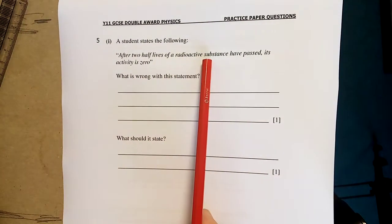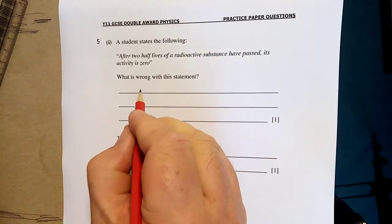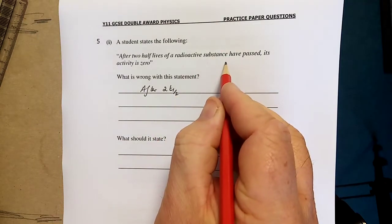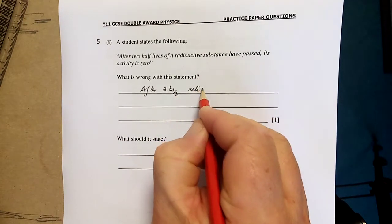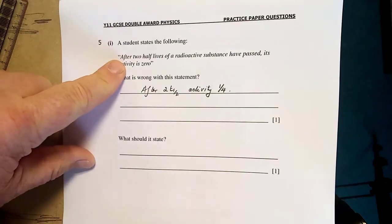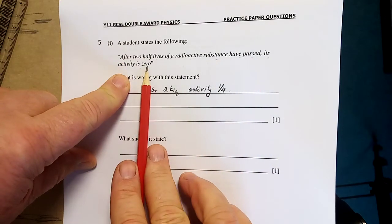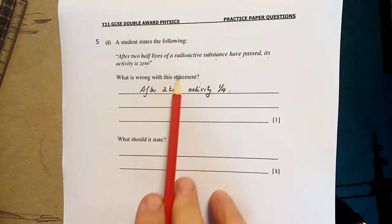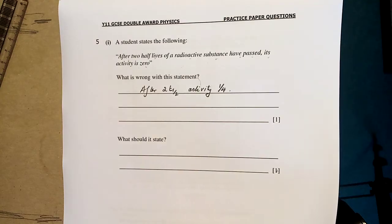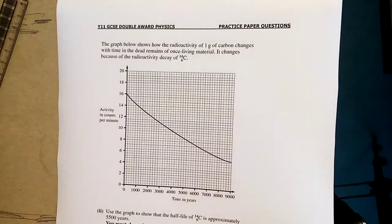The student states the following: After two half-lives have passed, the radioactive substance's activity is zero. Now, the half-life - after two T-half, the activity would be one quarter of the original. What they are saying is half it disappears and then it disappears again. It doesn't do that. And remember, it doesn't disappear. It changes. No, the student is wrong.